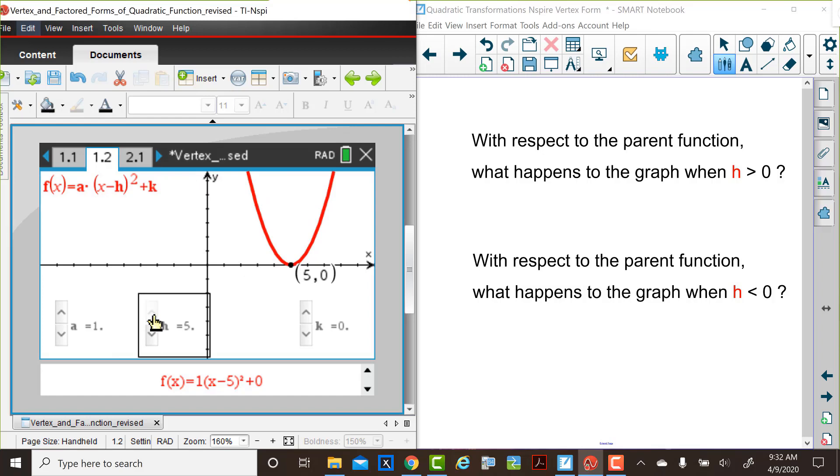So when we compare this particular graph to the graph that we saw of the parent function, how does this graph compare? When h is negative, how does the graph compare to the graph of the parent function? Pause the video for just a moment and write down your thoughts about these two questions and then come back to the video.